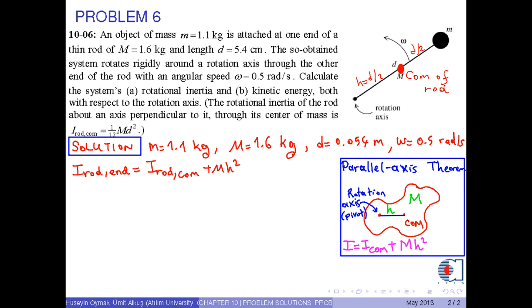If we put the given values into this equation, we obtain 1 over 12 times capital M times d squared plus M times d over 2 squared.